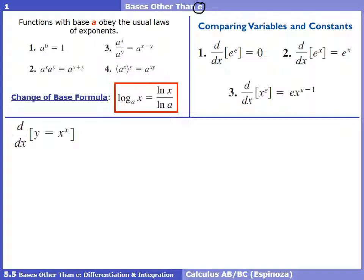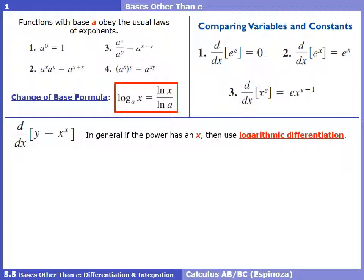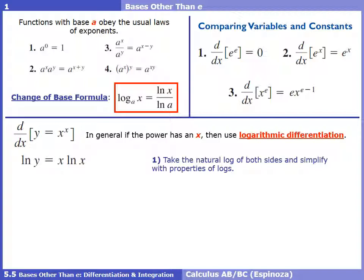Now, what about x to the x, where both the base and the power are variables? In this case we use logarithmic differentiation. You can identify a problem needing this when both the base and the power are x of some sort. The first step is to take the natural log of both sides and simplify: ln y equals ln of x to the x, and using the log power property we move the exponent to the front, giving ln y equals x ln x.